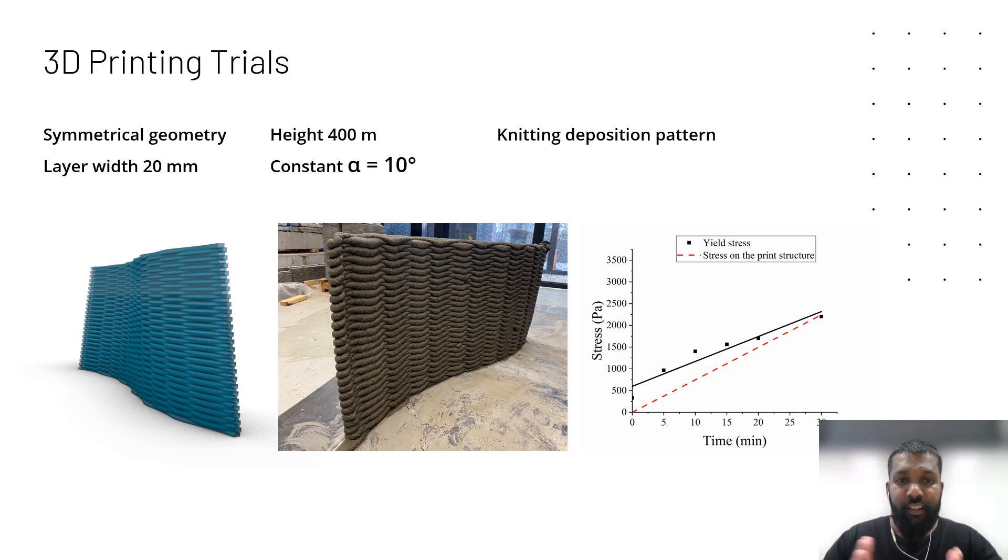We used a layer width of 20 millimeters where the nozzle diameter is 15, as I said earlier, but once the material comes out it squashes a bit and it comes up to 20 millimeter layer width. As you can see on the right-hand side, the dashed line which is the applied stresses on the bottom layers, which we calculated based on equation 1 in our previous slides, didn't go above the straight black line which is the static yield stress of the material. This ensures the safety net of this design, so we can say as long as the line doesn't pass the straight line, we are safe.